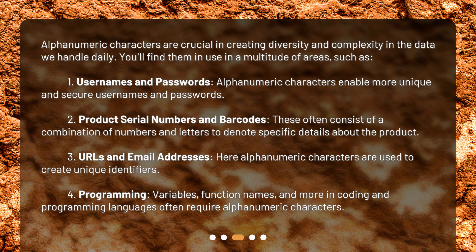2. Product Serial Numbers and Barcodes — these often consist of a combination of numbers and letters to denote specific details about the product. 3. URLs and Email Addresses — here, alphanumeric characters are used to create unique identifiers. 4. Programming — variables, function names, and more in coding and programming languages often require alphanumeric characters.